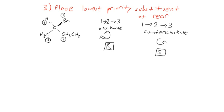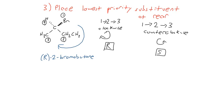Going back to our 2-bromobutane: our hydrogen is placed at the rear, and we find that following one to two to three is clockwise. Clockwise is our R stereochemistry. So to name that compound, we have 2-bromobutane, and to specifically designate it as this enantiomer, we place R at the beginning. That is how you use the CIP priority rules to systematically determine whether a chiral molecule is one absolute configuration or the opposite.